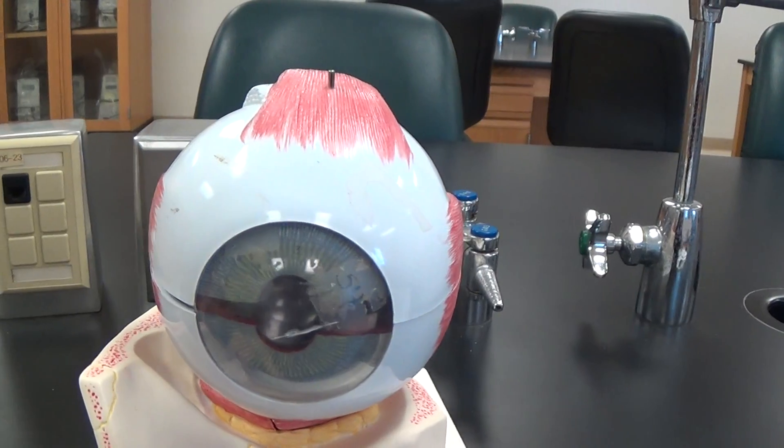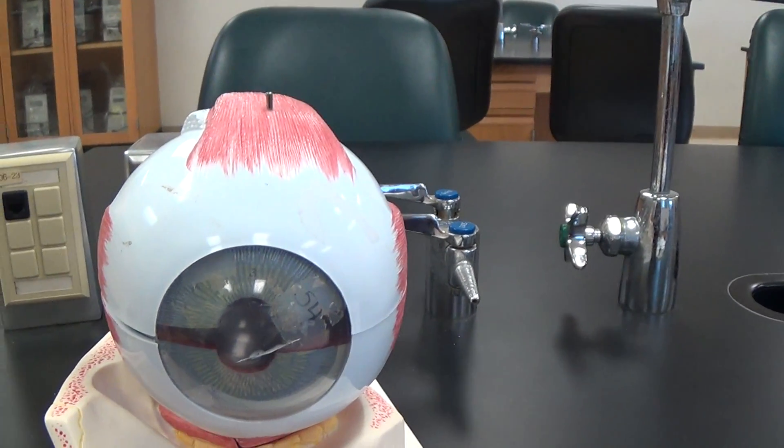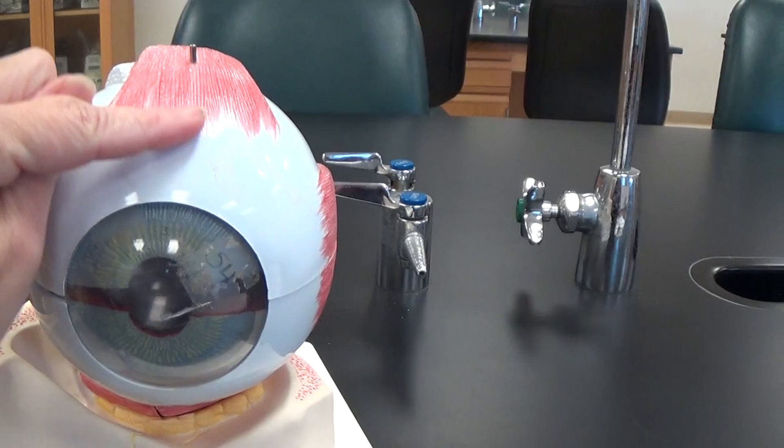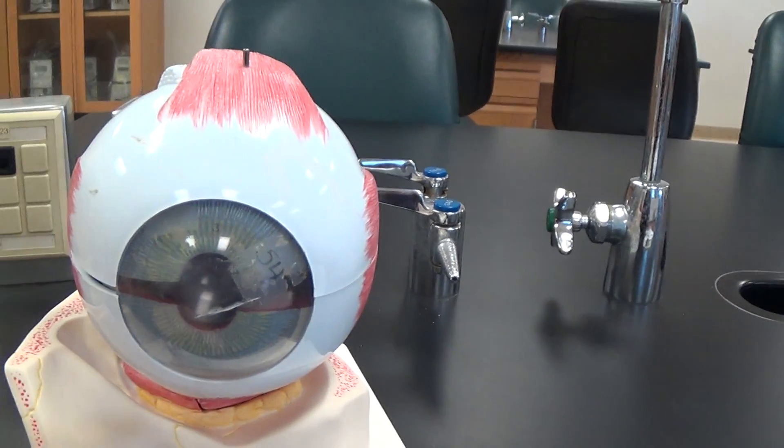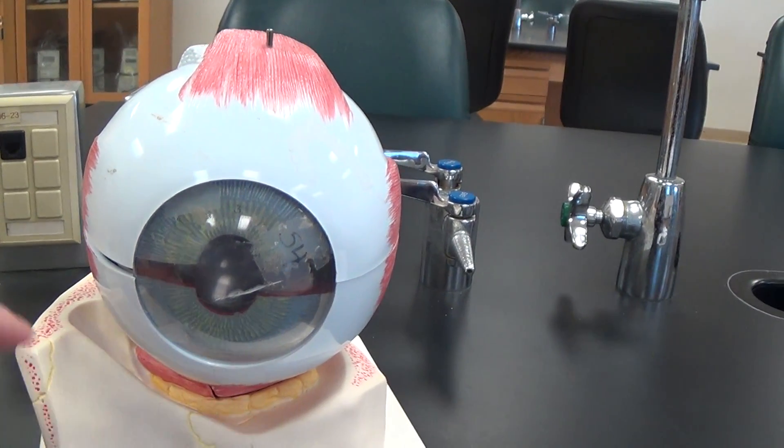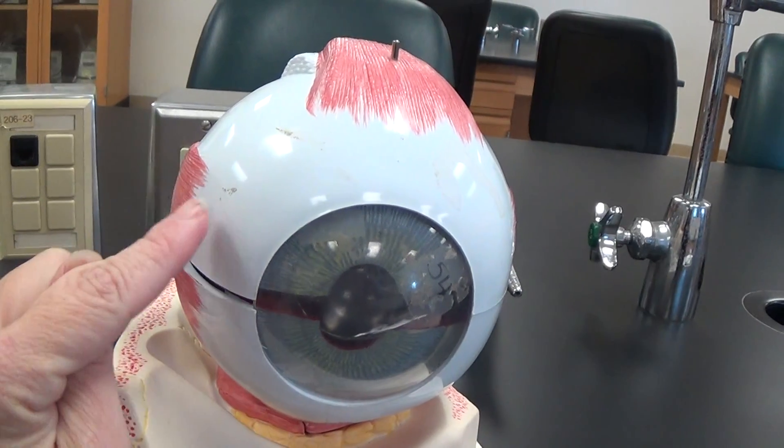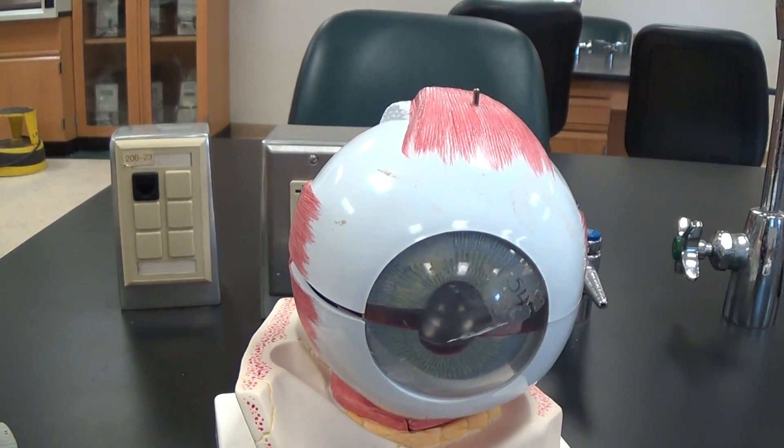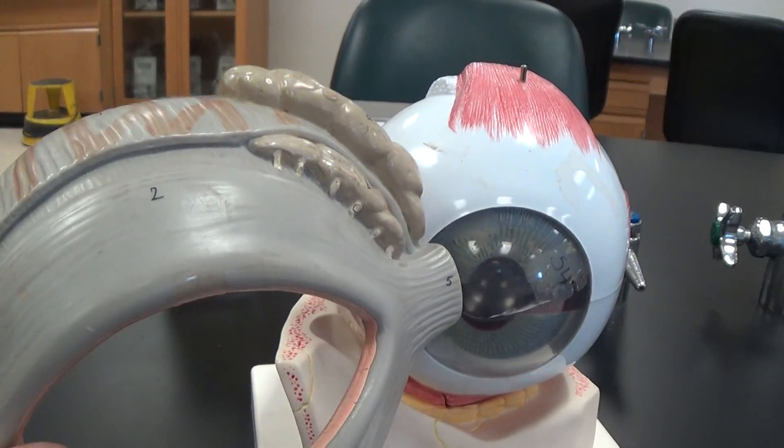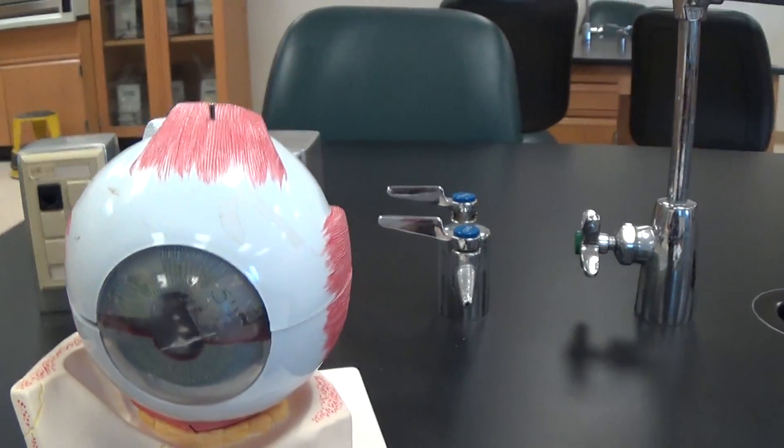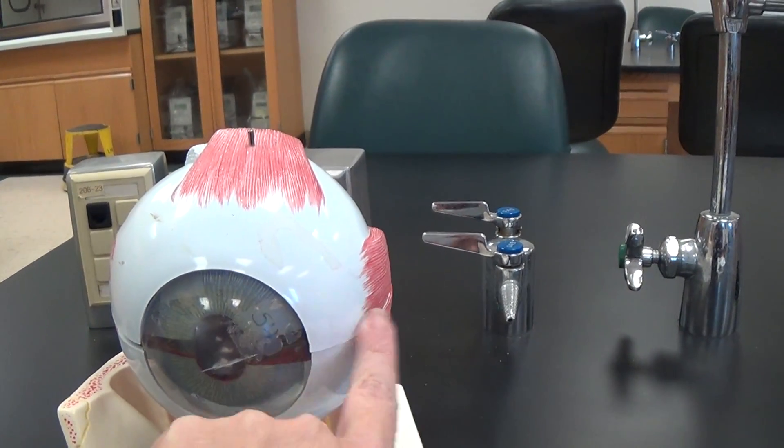Associated with this, we have several muscles that attach to the sclera. We have four straight muscles. This is the superior rectus. There'd be the inferior rectus down here, the medial rectus, and we know medial versus lateral because of where that lacrimal gland was, and that makes this the lateral rectus.